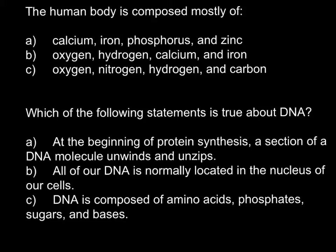The human body is composed mostly of... and the first answer is A: Calcium, iron, phosphorus and zinc. All these elements are very important. Calcium is present in large quantities in our bones, iron is present in large quantities in our liver and blood, phosphorus is present in DNA, and zinc is present as a trace element. But I must say that we have answers that are more correct and whose elements are more abundant.